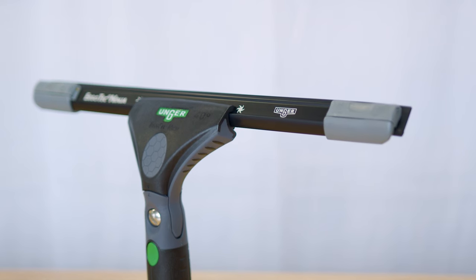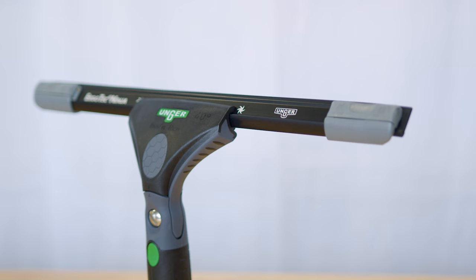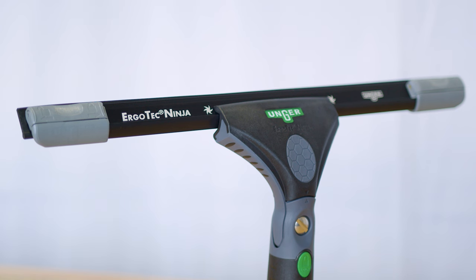The Unger Ninja Aluminum Squeegee channel complements the handle, providing a lightweight yet robust tool for precise cleaning, especially in hard-to-reach areas.